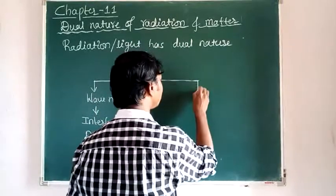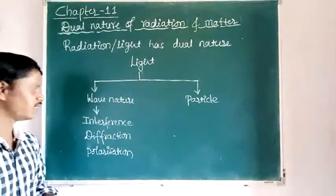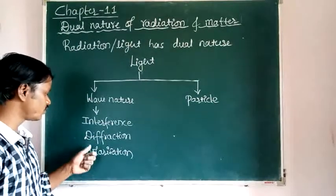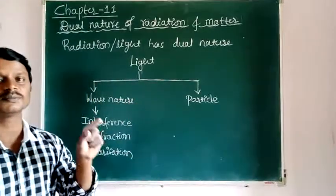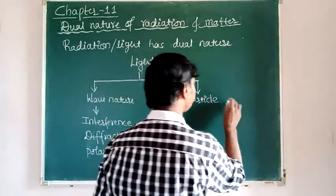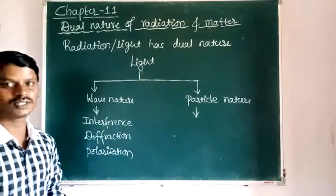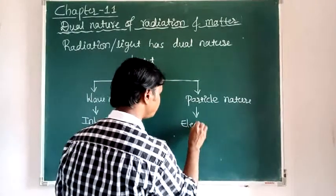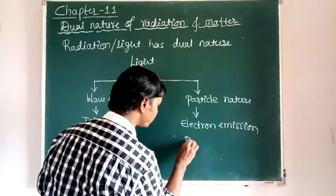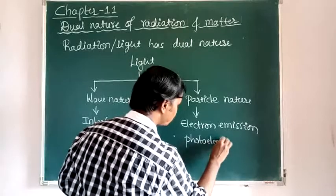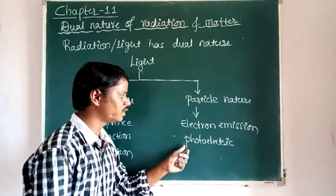Another nature of light is particle nature. Sometimes the light behaves as a wave — in phenomena like interference, diffraction, and polarization, the light behaves as a wave. But sometimes the light behaves as a particle, in phenomena like electron emission and photoelectric effect. So the particle nature of light can be explained by phenomena like electron emission and photoelectric effect. In this chapter, we are going to discuss about the particle nature of light, electron emission, and photoelectric effect.